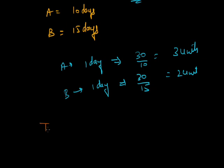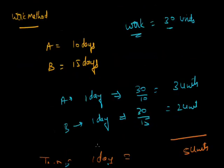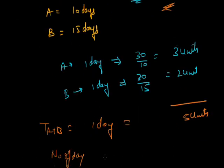Now combining A and B: their combined one day work is 3 plus 2 = 5 units. So A and B together complete 5 units per day. The number of days required to finish 30 units of work, at 5 units per day, is 30 divided by 5 = 6 days. The answer is 6.